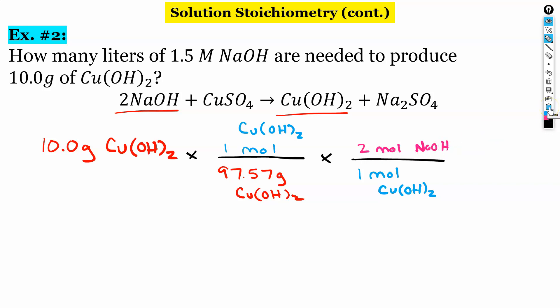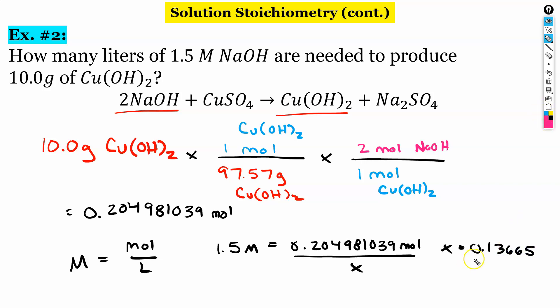All right. So when we punch this in our calculator, we get a really long number. 0.204981039 moles. We're going to use that whole number here. So in our molarity equation, again, we're finding liters. So when we write this all out, 1.5 molar, 0.204981039 moles. We're trying to find liters. When we rearrange our equation, we get 0.13665. And we want two sig figs. So our answer will be 0.14 liters.